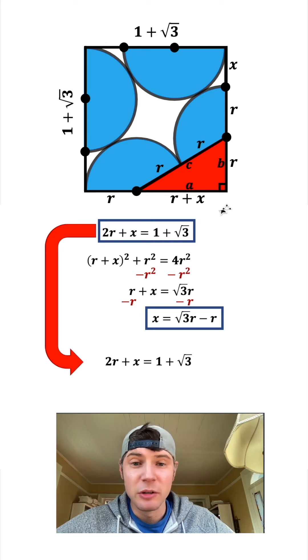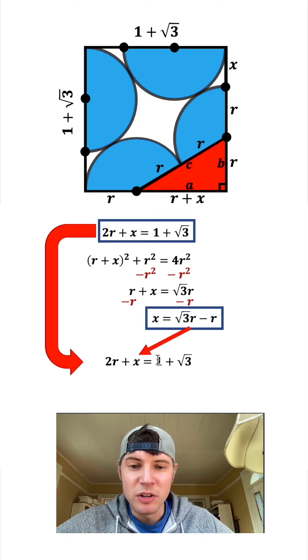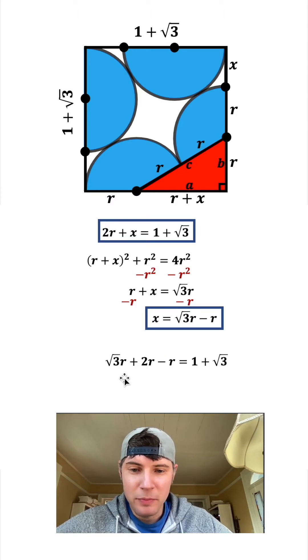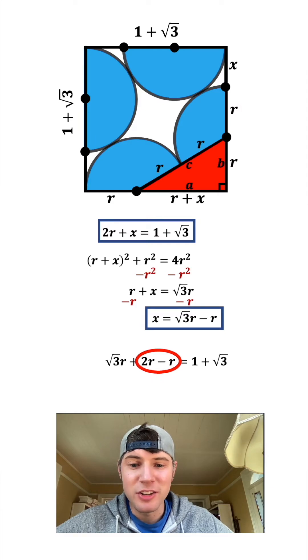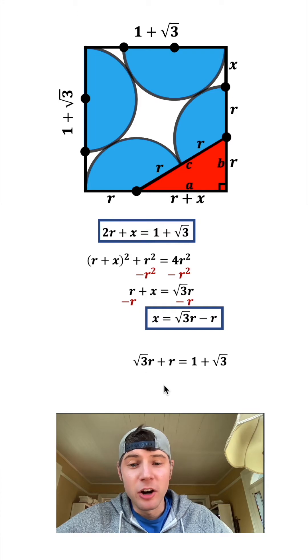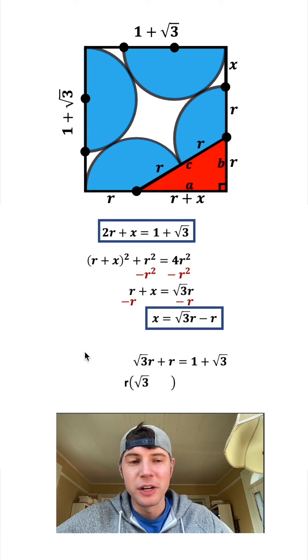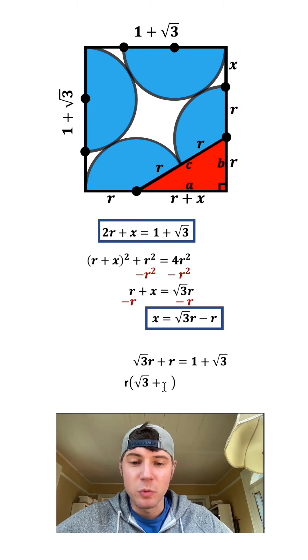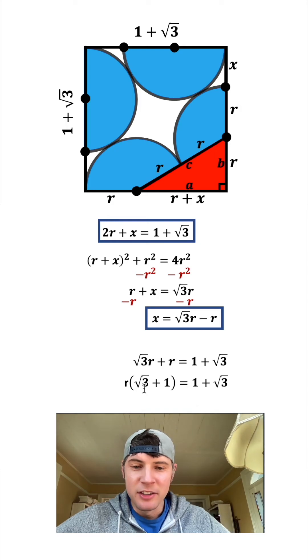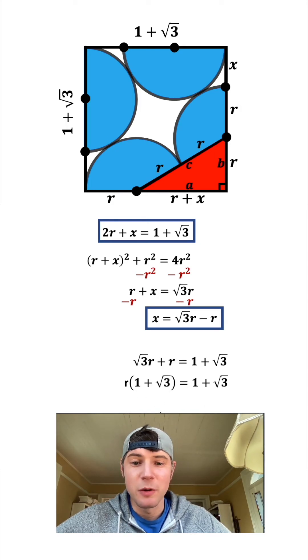Substituting square root 3 times R minus R for X, we get 2R plus square root 3 times R minus R equals 1 plus square root 3. Simplifying, R plus square root 3 times R equals 1 plus square root 3. Factoring out R on the left side gives us R times (square root 3 plus 1) equals 1 plus square root 3.